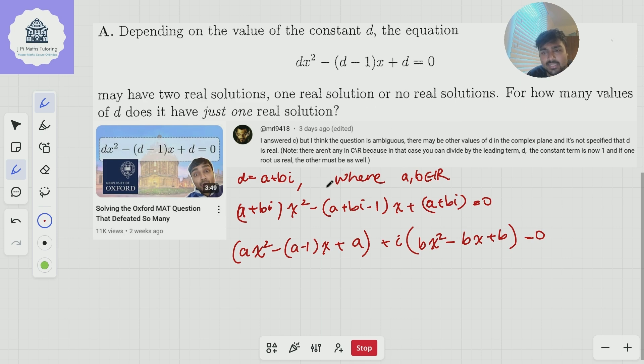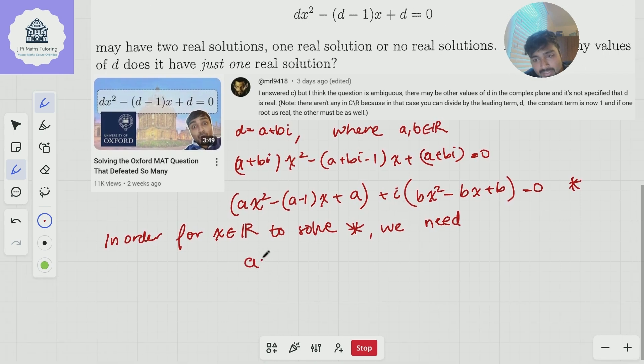And now what we want is we want this equation that I've got here to have exactly one real solution x. Now in order for x in the reals to solve this equation, which I'll call star, we need two equations to be true. We need ax squared minus (a minus 1)x plus a to equal 0, and we need this imaginary part to be 0 as well, so bx squared minus bx plus b to be 0, like so.